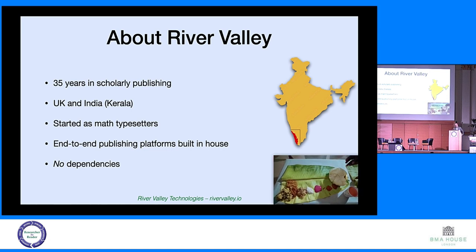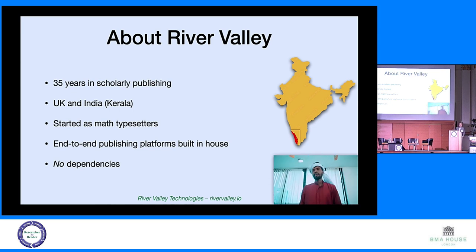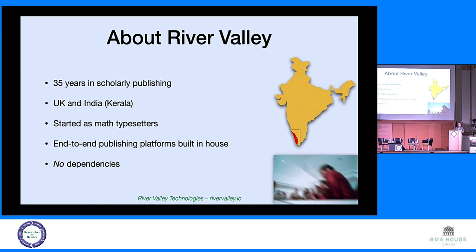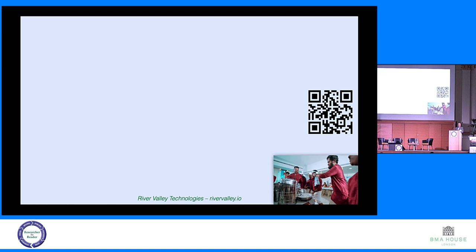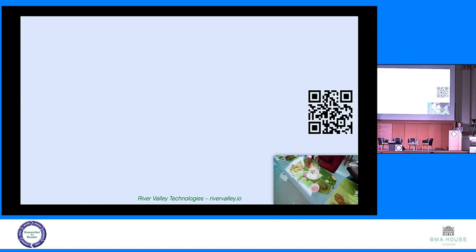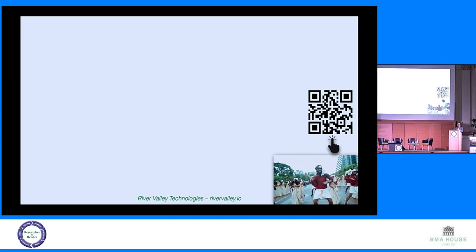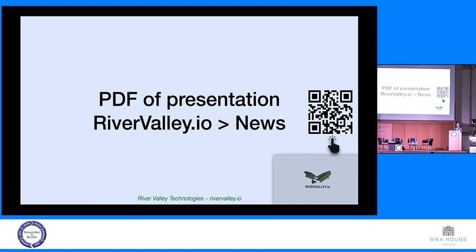One of the things we are proud of is that we have no dependencies on any third party. All our software is written in-house — either open software or we've written it ourselves. Even if Adobe go bust tomorrow, we can still produce our PDFs. Throughout this presentation I've put little QR codes. Better still, I've put up a PDF of this presentation online, so you don't have to take notes. You can download it from River Valley I.O. News with lots of clickable links.